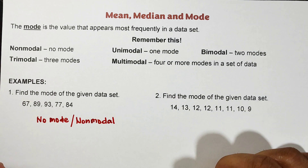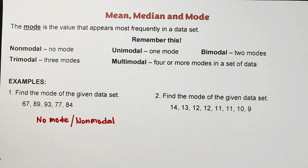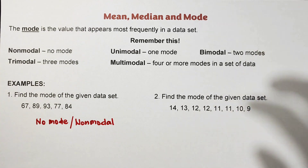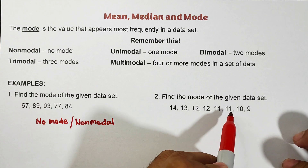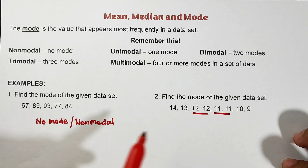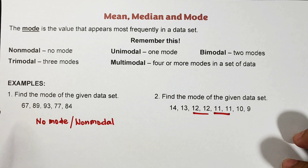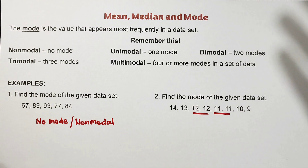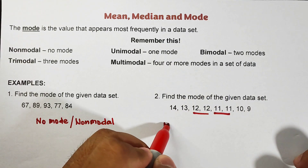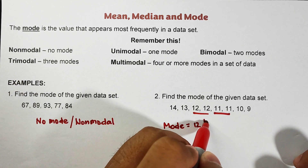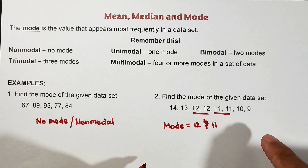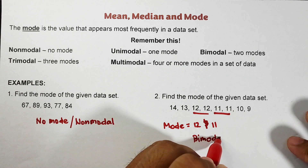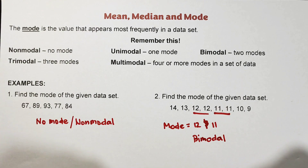Now for item number two: find the mode of the dataset 14, 13, 12, 12, 11, 11, 10, and 9. Notice that 12 and 11 each appear more times compared to 14, 13, 10, and 9 — they appear twice each, equally frequent. So we have two modes: 12 and 11. Since there are two existing modes, this is a bimodal dataset.